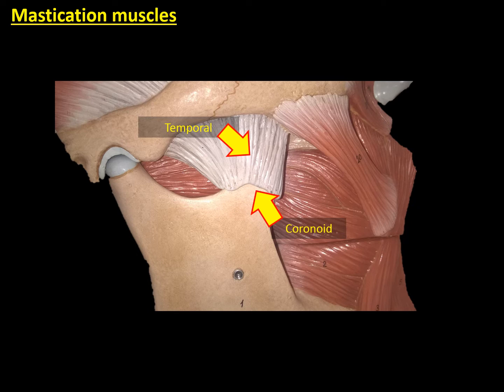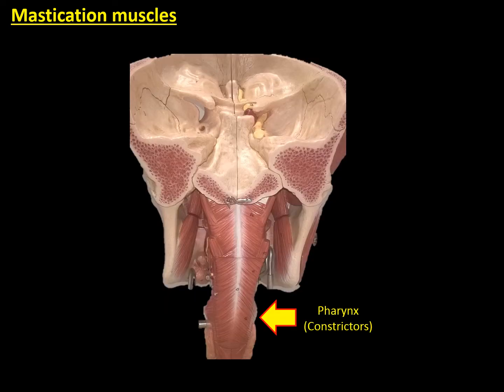Medial to this tendon, we can observe the lateral pterygoid muscle. Finally, if you turn the muscle to the dorsal part, you can see how the medial pterygoid muscle attaches to the angle of the mandible at its internal part.